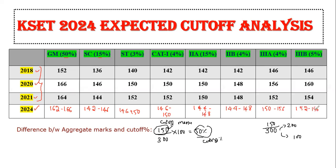If your marks lie within these cutoff ranges, you are in the safest zone. For general merit, if your marks lie between 160 to 170, that is safe. For other categories, even if your marks are below 150, you may still qualify based on your category. Marks of 170 plus is the safest for general merit, and for other categories, even below 160 there are chances to qualify.